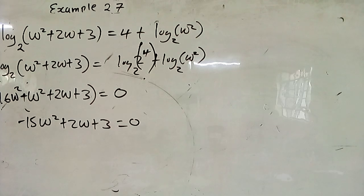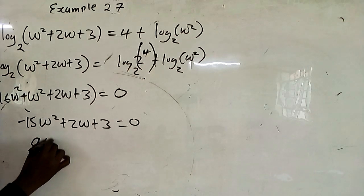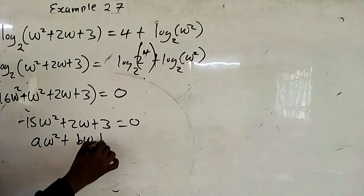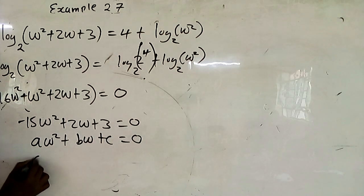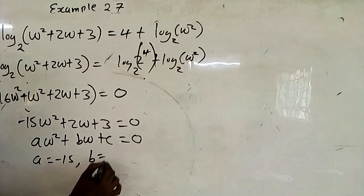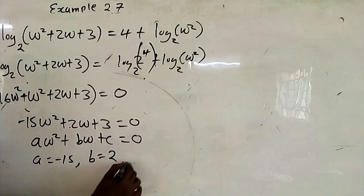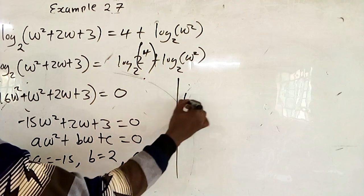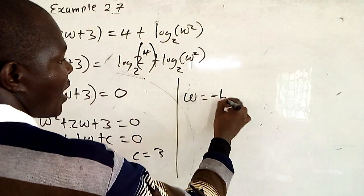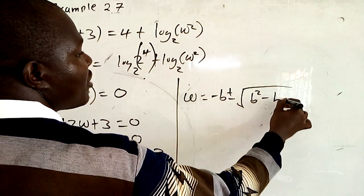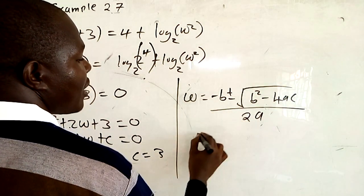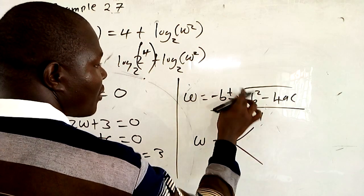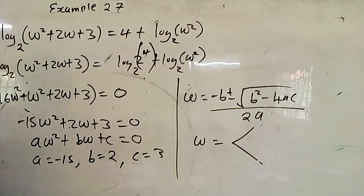The factors are not integers, so it is not easy to see them. You use the quadratic formula. In the standard form aw squared plus bw plus c equals zero, our a is negative 15, b is positive 2, and c is positive 3. The quadratic formula is w equals negative b plus or minus square root of b squared minus 4ac, all over 2a.